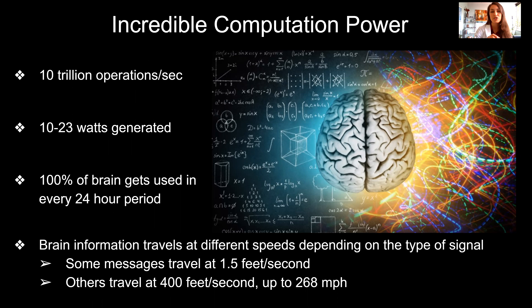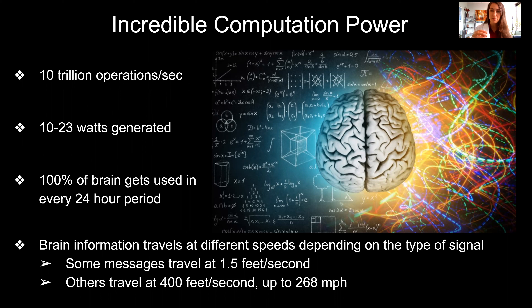There are actually more connections in the human brain than there are stars in the universe. The computational power of the brain is mind-blowing — 10 trillion operations per second occur in a waking day, generating about 10 to 23 watts. The myth that we only use 10% of our brain is totally false. In every 24-hour period we use at least 100% of our brain. Messages can travel at anywhere from 1.5 feet per second up to 400 feet per second — up to 268 miles per hour.